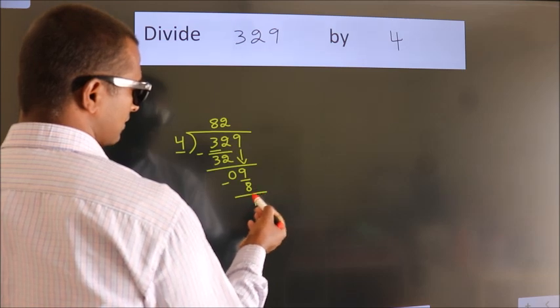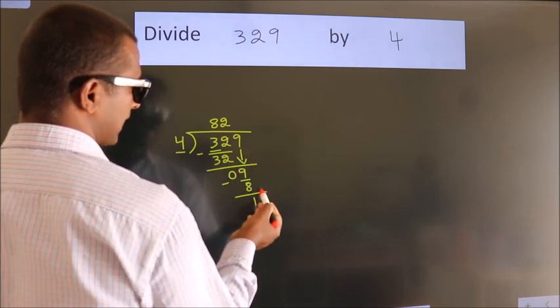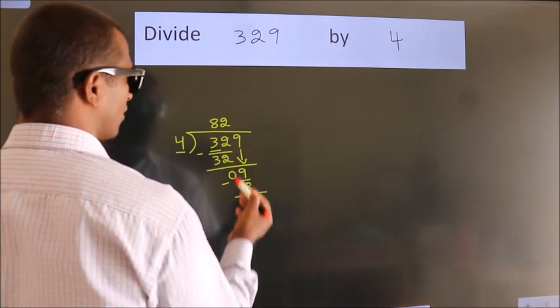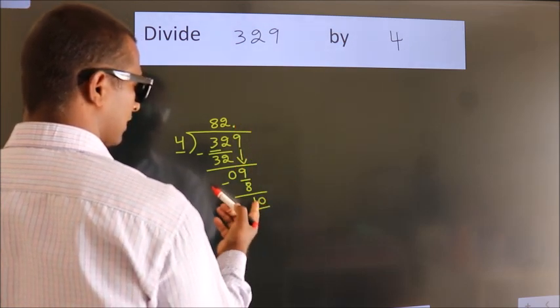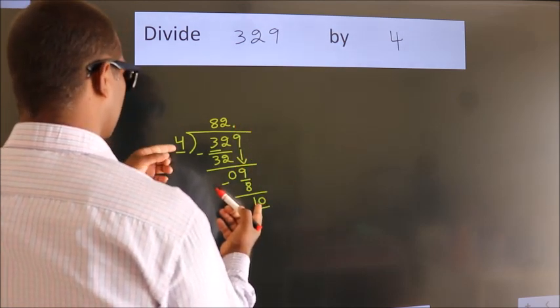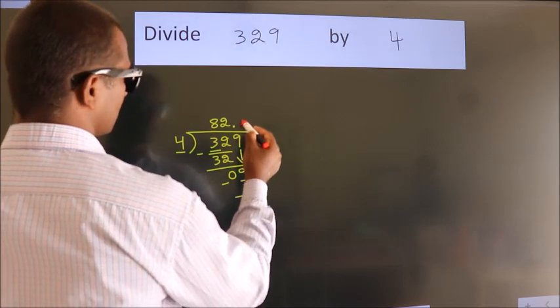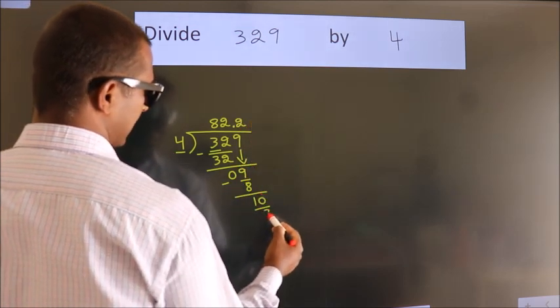After this, no more numbers to bring it down. So, what we do is, we put dot, take 0. So, 10. A number close to 10 in the 4 table is 4 twos, 8.